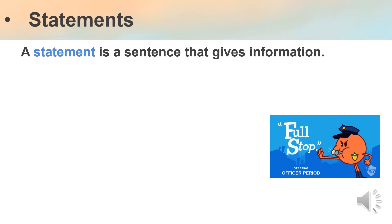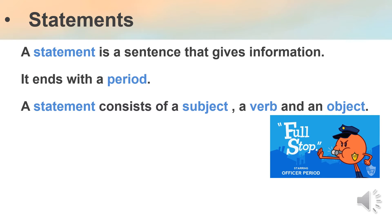The first type is statements. A statement is a sentence that gives information. It tells you something — you would understand a thing when you read it. It ends with a period, a full stop, and a statement consists of a subject, a verb, and maybe an object. Look at the examples.